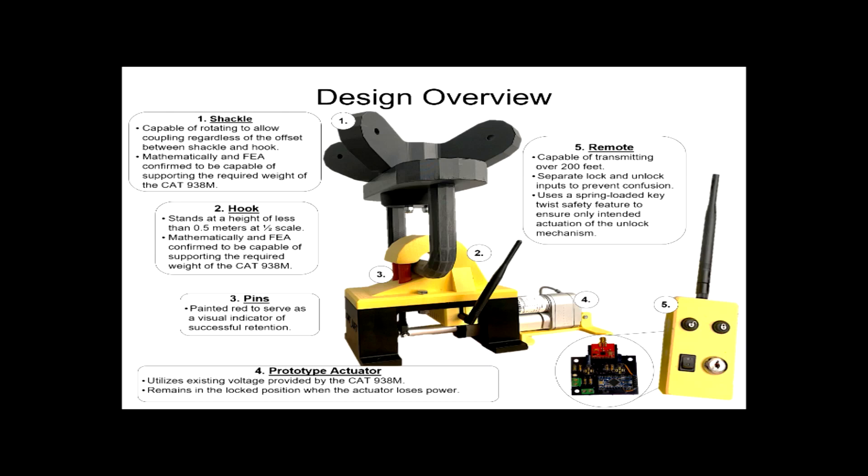The linear actuator runs off the same power supply voltage as the CAT 938M. The actuator is also equipped with feedback so that the actuator is always aware of its position. If power is interrupted, the linear actuator will remain in the locked position for safety.